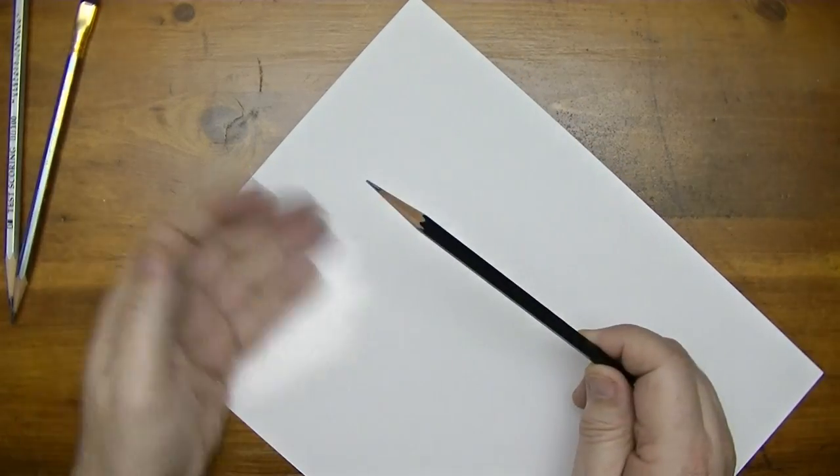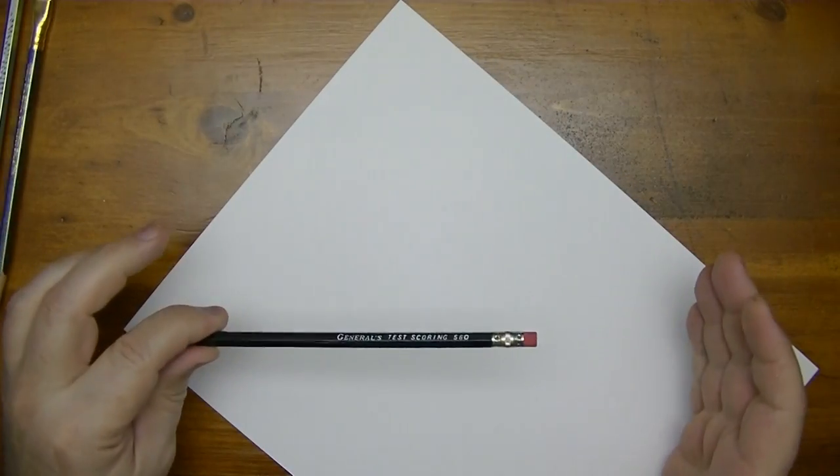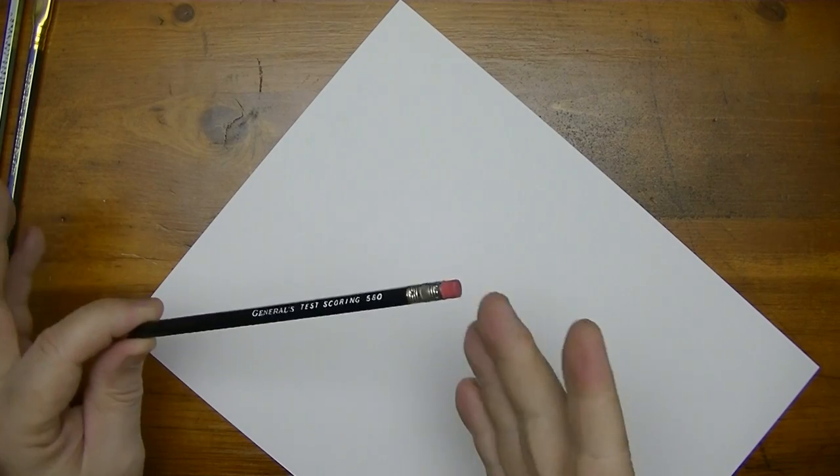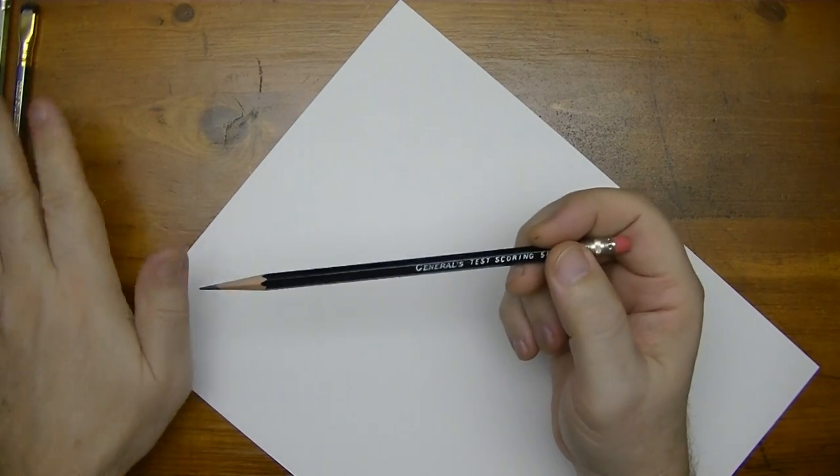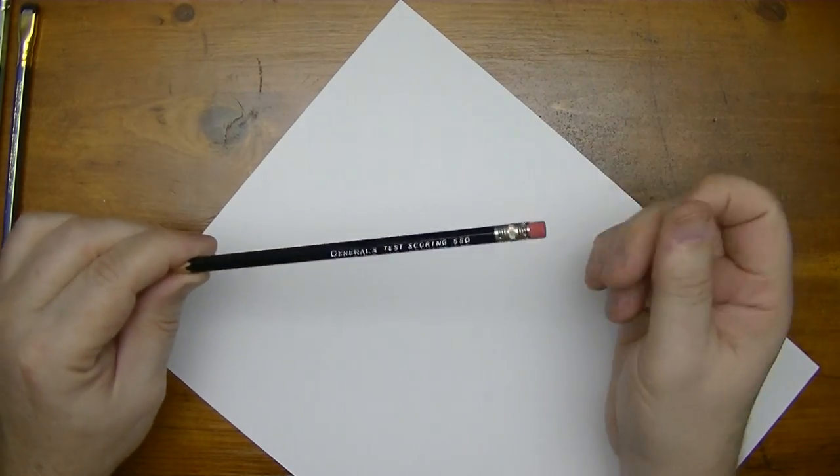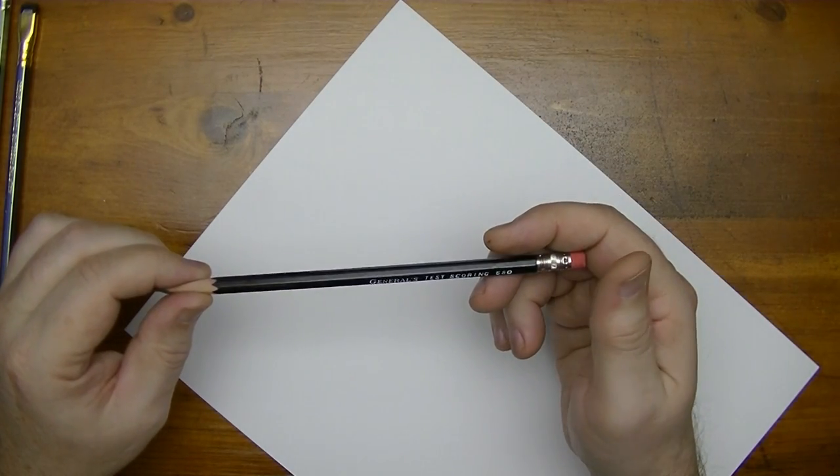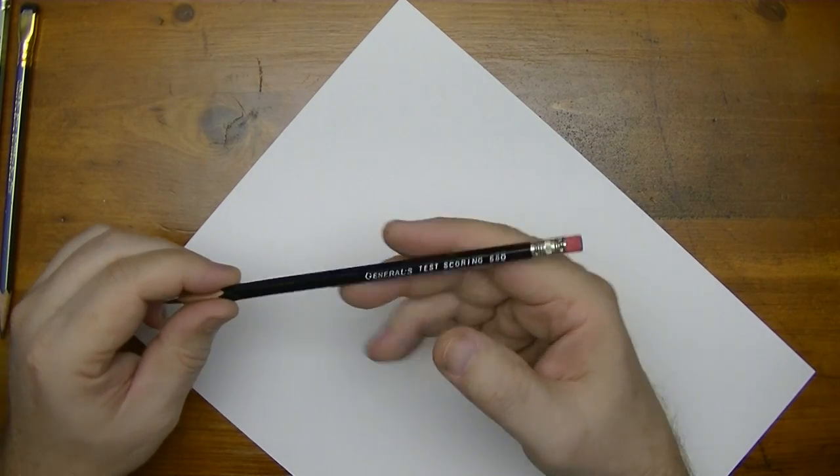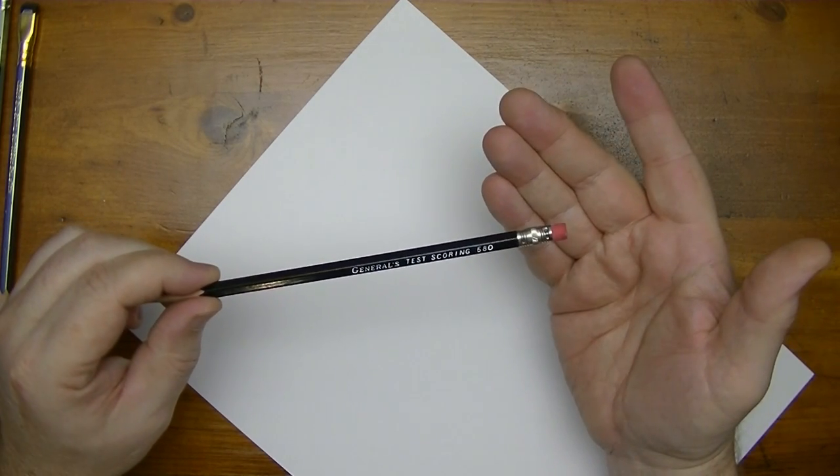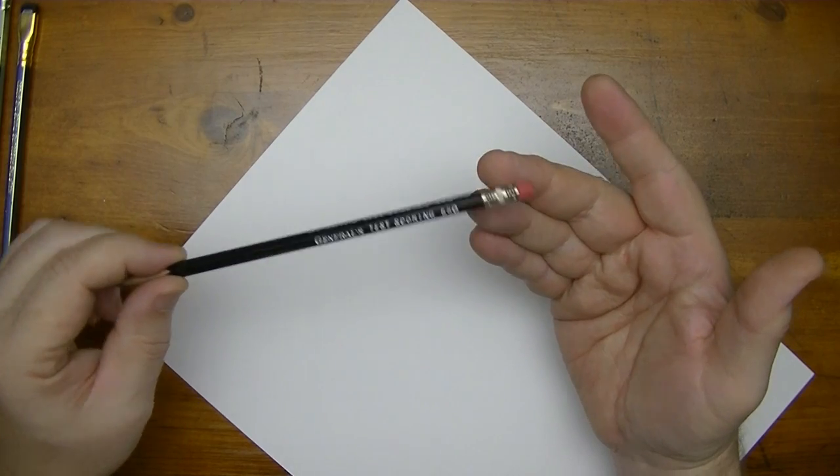Alright. So now let's go ahead and check out the shades here, the tone quality. And we're going to figure out here which ones come out darker and lighter. And that way you can use that as a means of comparison. So, of course, our guest of honor here is this General's Test Scoring 580 pencil.